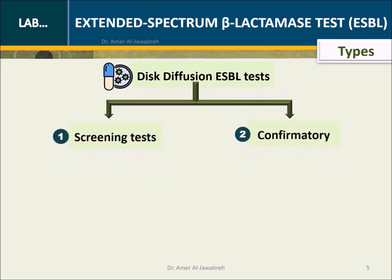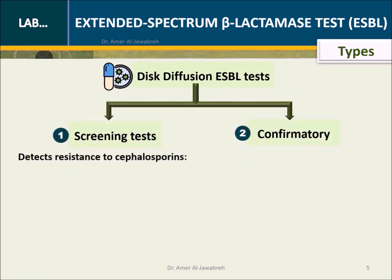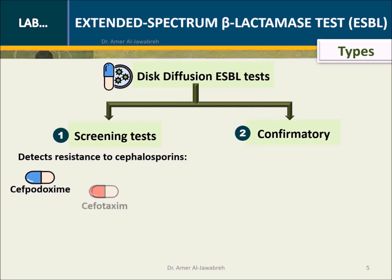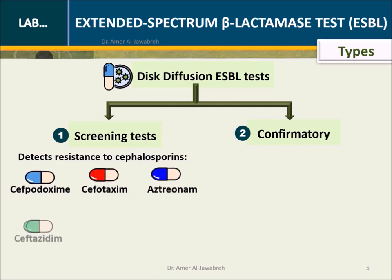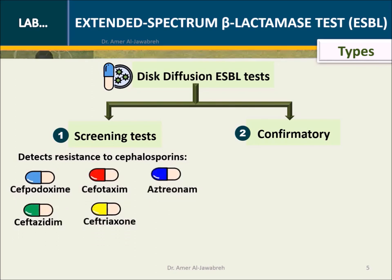ESBL types — disc diffusion ESBL screening test: detects resistance to cephalosporins including Cefpodoxime, Cefotaxime, Aztreonam, Ceftazidime, and Ceftriaxone. Test at least 2 antibiotics to increase the sensitivity of the ESBL test.